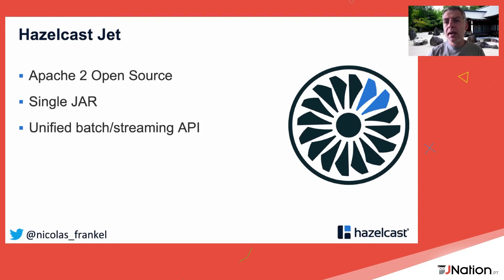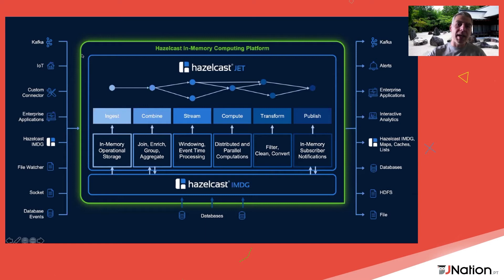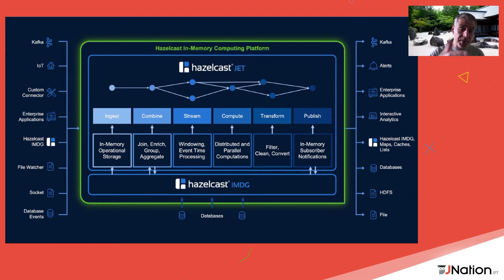The other way is the server-client API, which allows independent scaling. Hazelcast Jet bridges batch and streaming APIs so moving from batch to streaming is just one line of code. It supports sources like Kafka, IoT devices, in-memory data grids, file systems, sockets, and change data capture from databases. You can also create custom sources and sinks.